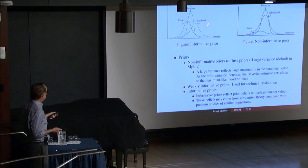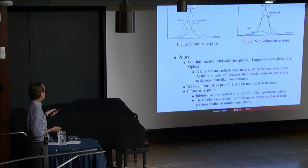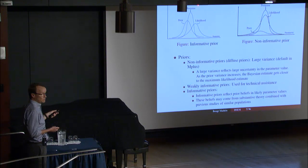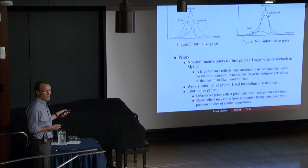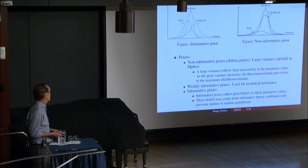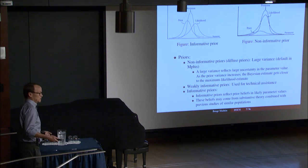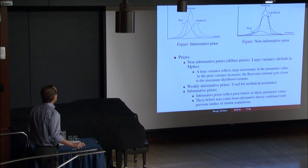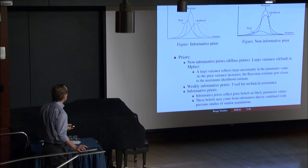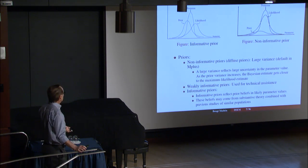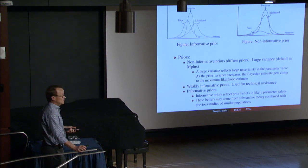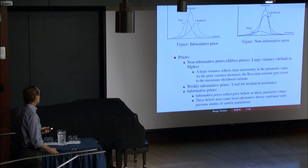What Bayes does is weigh together the likelihood from maximum likelihood with the prior to get a posterior, obtained by the so-called Bayes theorem — a very simple theorem for going backwards. It's in our new regression and mediation book if you want to read about Bayes.